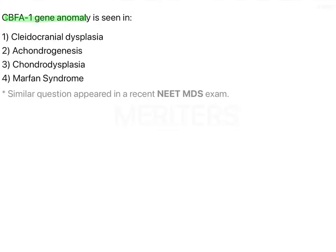CBF A1 gene anomaly is seen in which condition? The options are cleidocranial dysplasia, achondrogenesis, chondrodysplasia, and Marfan syndrome. Let's look at the genes that cause mutations in each of these pathologies. Cleidocranial dysplasia is caused by the RUNX2 gene, which is also known as the CBF A1 gene — the one asked about in the question.